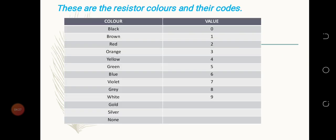These are the resistor colors and their codes: black is 0, brown is 1, red is 2, orange is 3, yellow is 4, green is 5, blue is 6, violet is 7, grey is 8, white is 9. Gold doesn't have any value, silver doesn't have any value, and none also doesn't have any value.